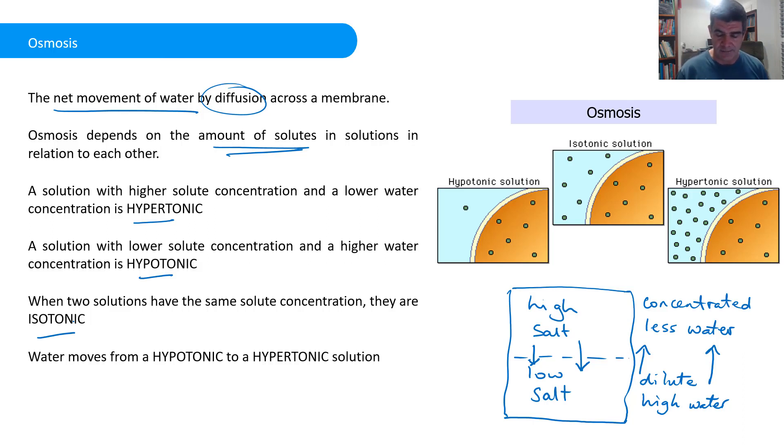We have a net movement from hypo to hyper, that is where the water is high, low solute, to where the water is low and high solute. So let's have a look at each of these in a little bit more detail.